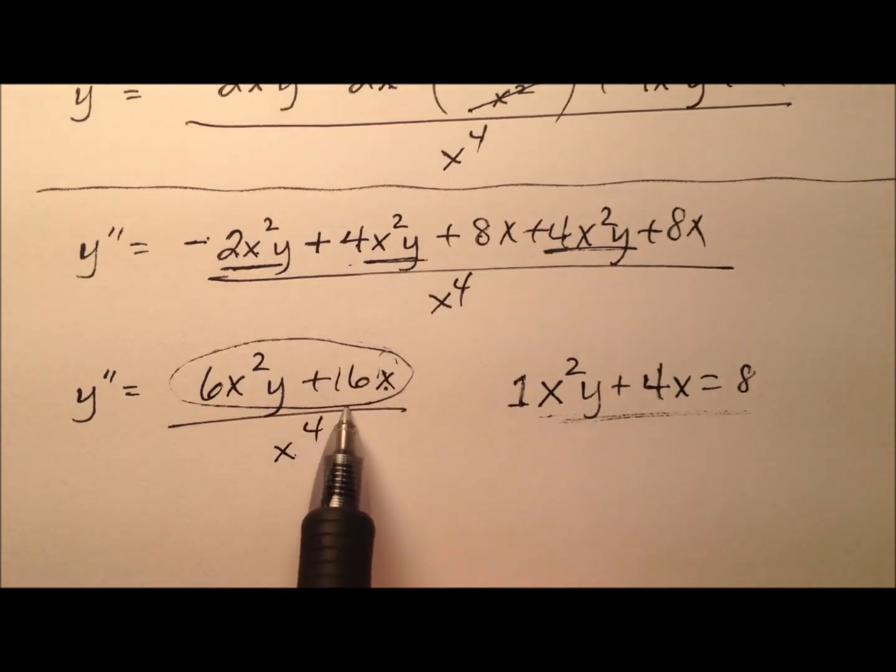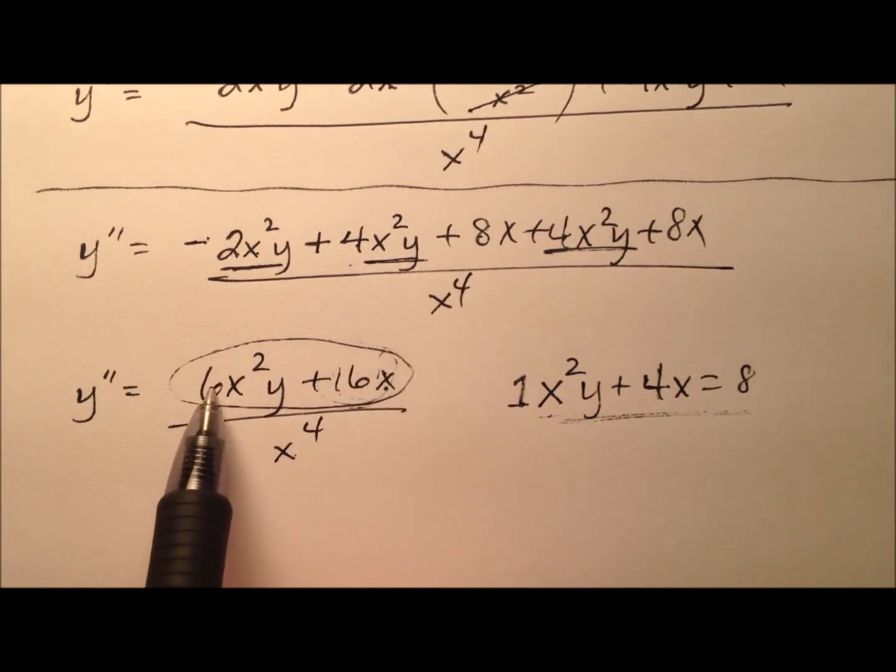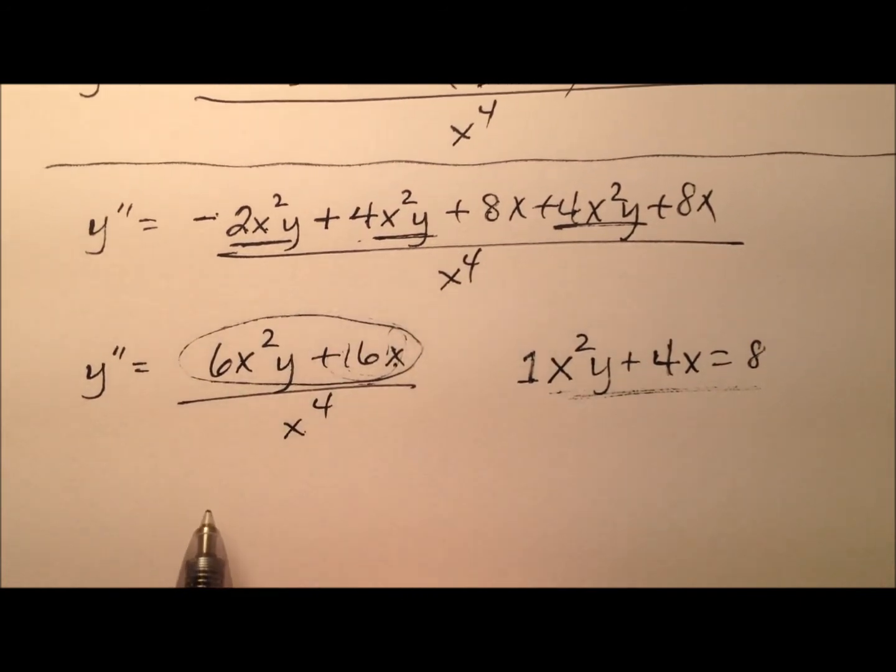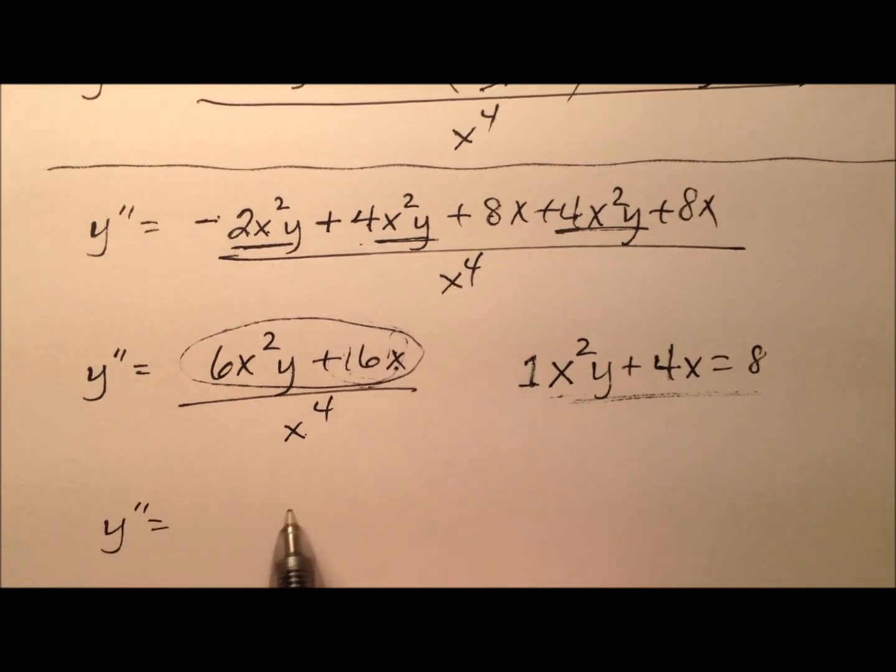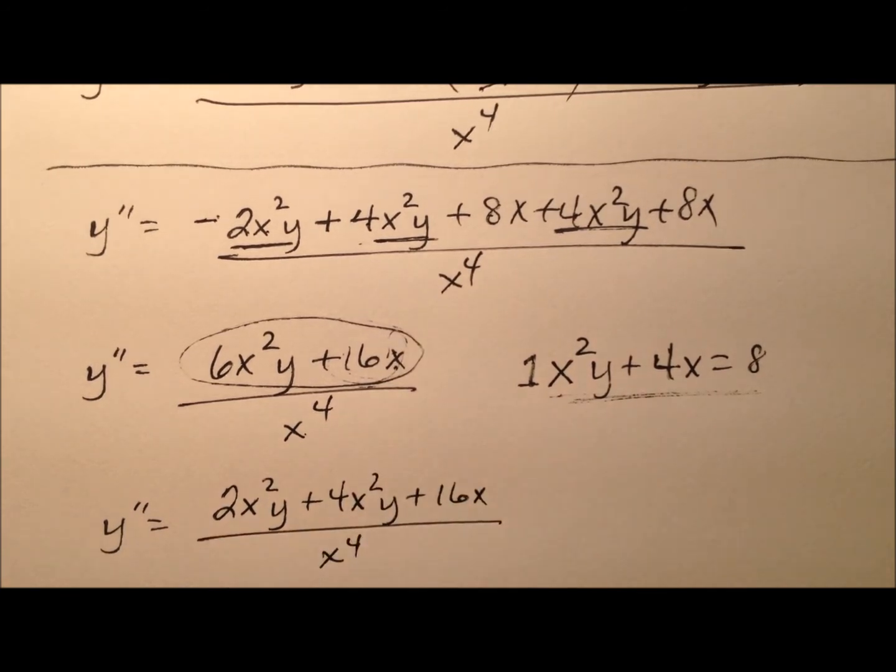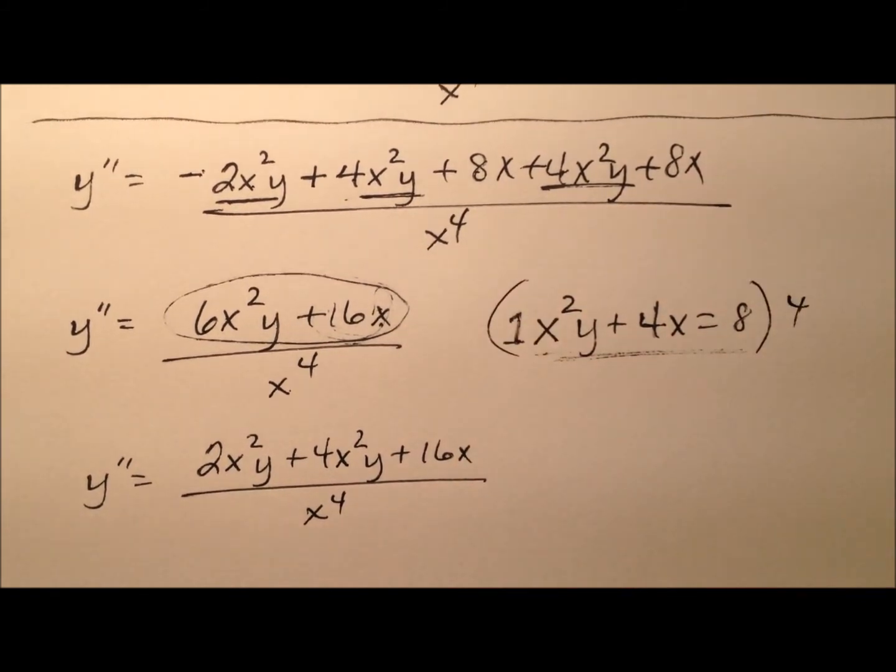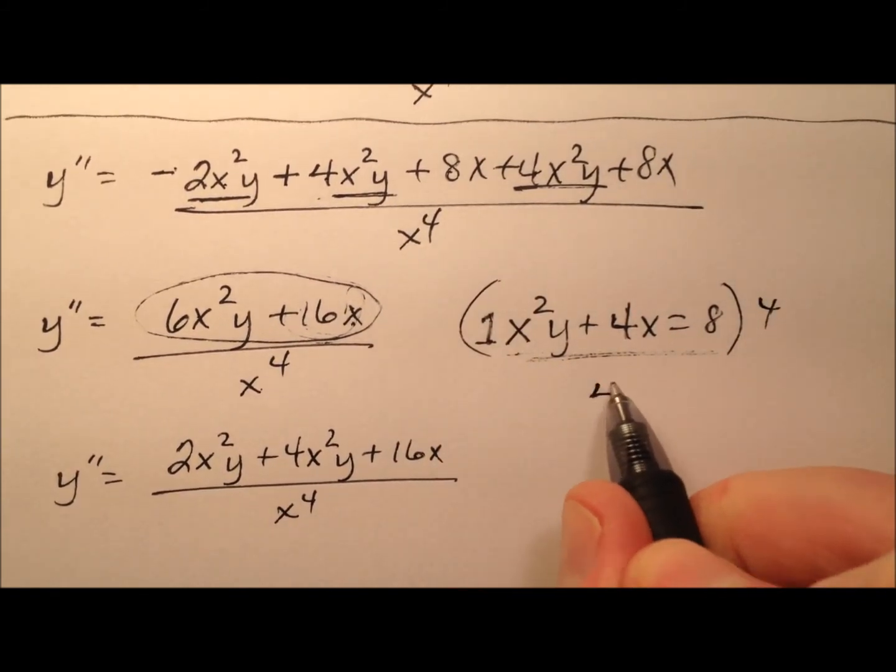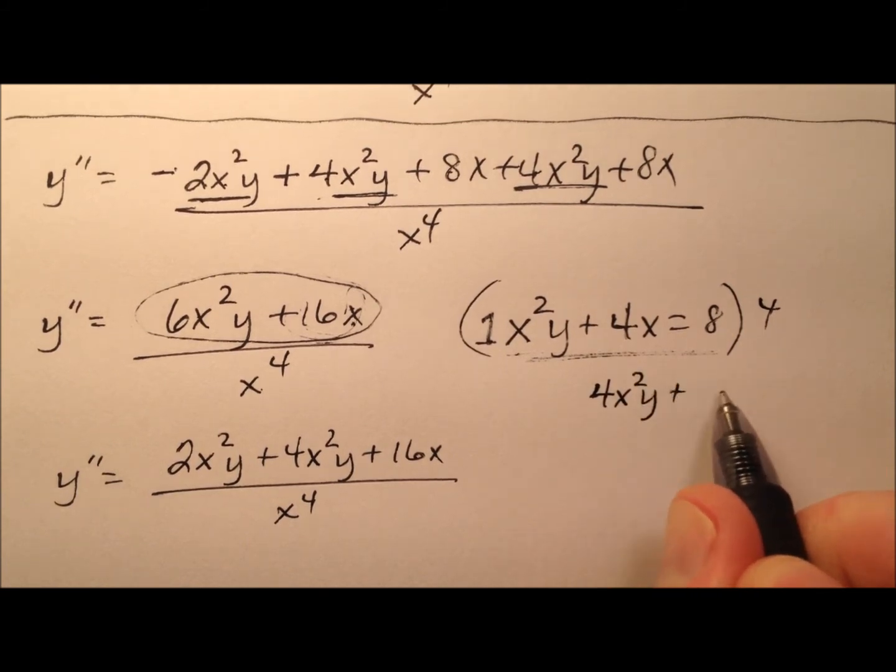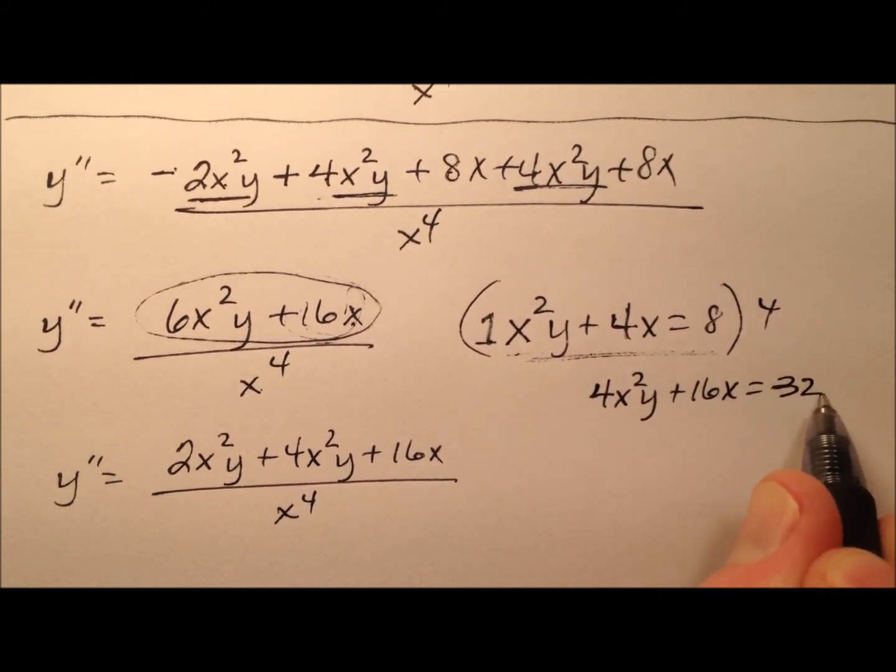I have 16x's here. If I divide that by 4, I can use 4 of these x squared y's. So I'm going to rewrite this numerator as 2x squared y plus 4x squared y plus 16x, all over x to the fourth. And then here I'm going to multiply both sides of my equation by 4, so I have 4x squared y plus 16x equals 32.